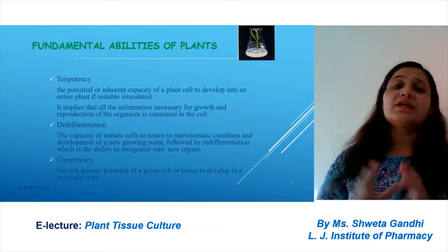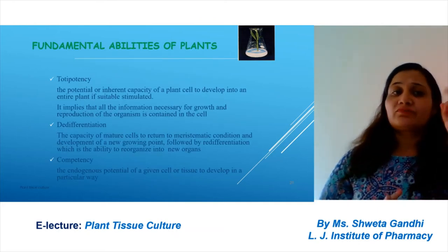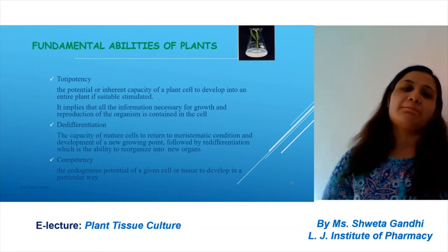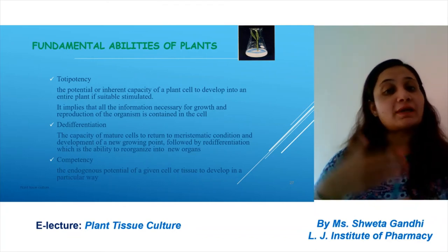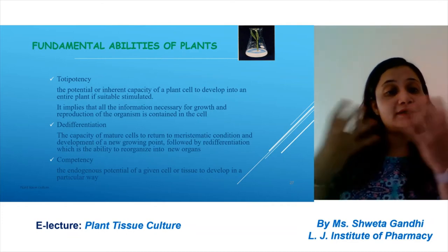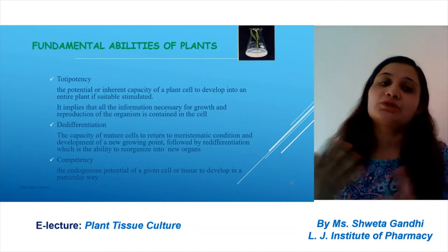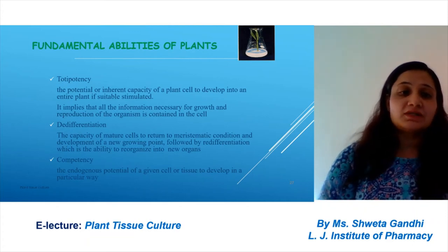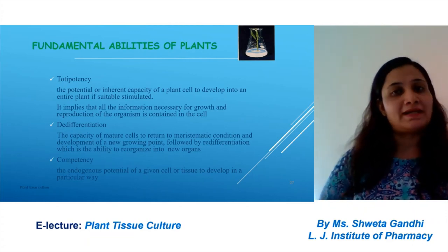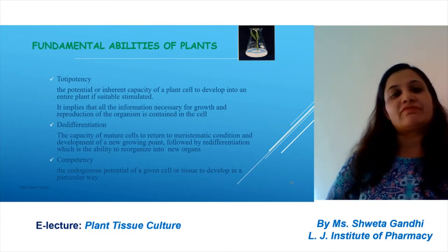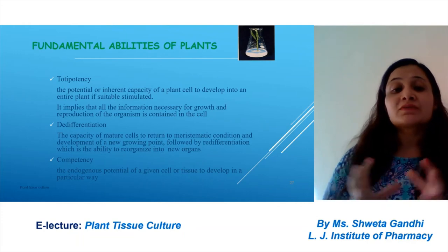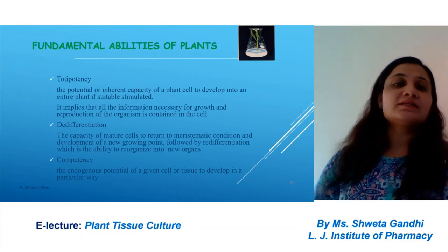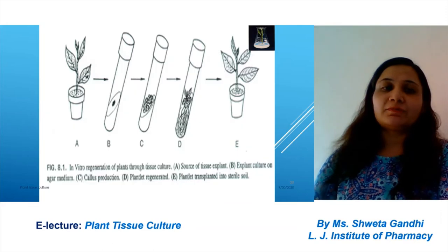The fundamental utilities of the plant fall into three categories: totipotency, de-differentiation, and competency. The potential or capacity of a plant to develop an entire plant from a single cell is totipotency. The capacity of a mature cell to return to the meristematic condition and develop a new growing plant is de-differentiation. Competency means survival of the fittest.